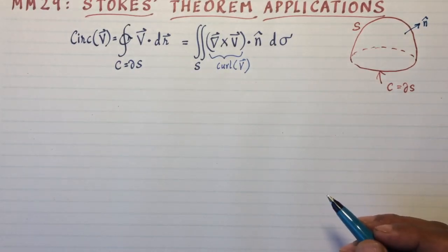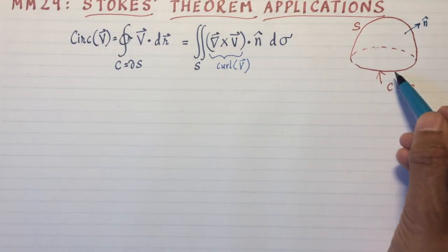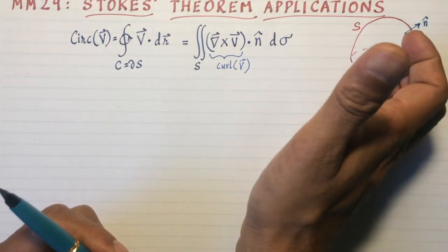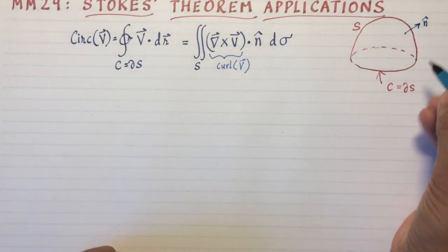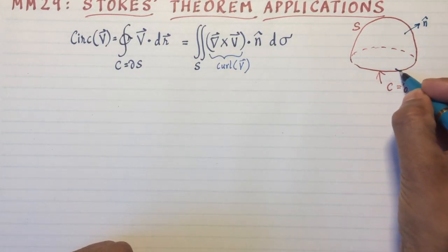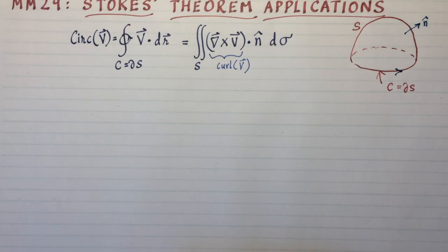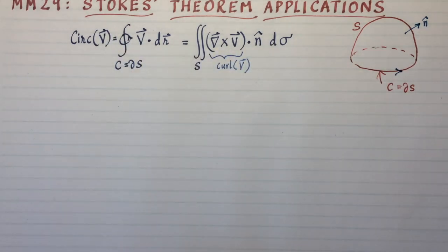Now once you've adopted the normal vector convention, the curve itself gets an orientation based on the right-hand rule. If you go around the curve with your right-hand fingers, then the thumb will point in the direction of the normal vector that you've chosen. So this curve gets an orientation based on the normal vector choice. Okay, once you've done all that, you have set up the theorem.